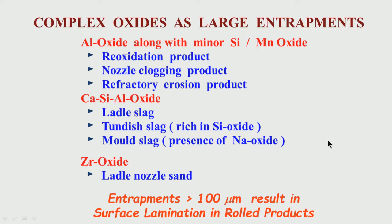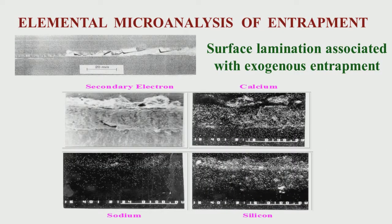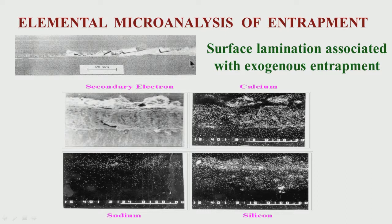Depending on the elements present, we can determine the genesis. Here we are finding calcium, silicon, and sodium — the presence of sodium indicates it is definitely coming from the mold slag. This is how we decide the source of the defect. The casting and rolling have already taken place, we have found defects on the surface, and we are trying to know where these defects came from. It is a post-mortem analysis.